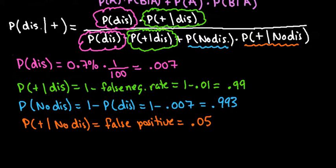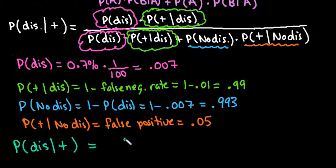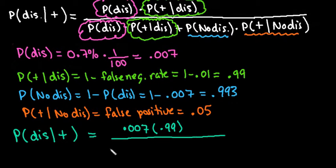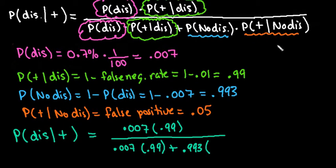Now all we have to do is plug in those values. The probability of having the disease given that we tested positive equals 0.007 times 0.99, divided by 0.007 times 0.99 plus 0.993 times 0.05. Now it's just a matter of plugging it into your calculator.